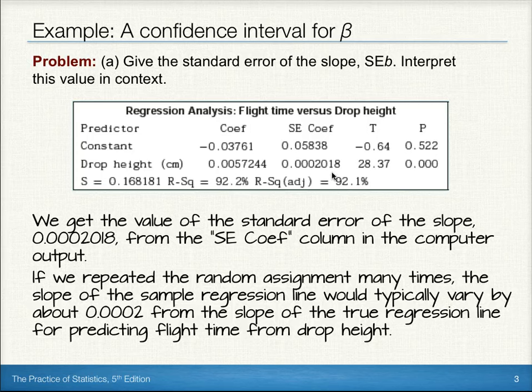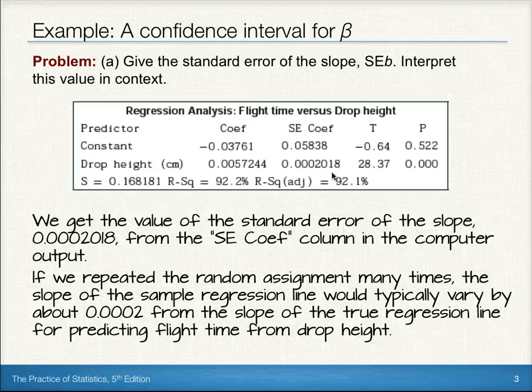Now, what that means is if we repeated the random assignment many times, the slope of the sample regression line would typically vary about 0.0002 from the slope of the true regression line for predicting flight time from drop height.